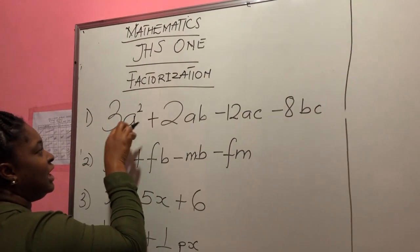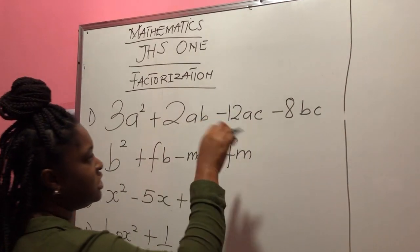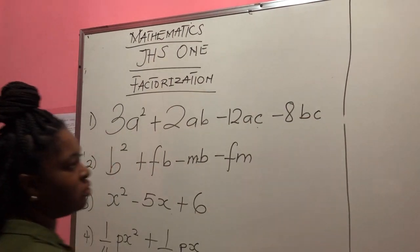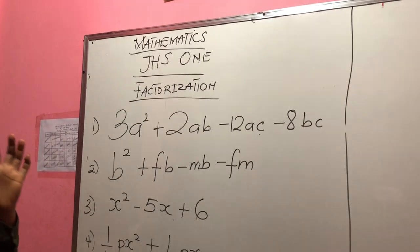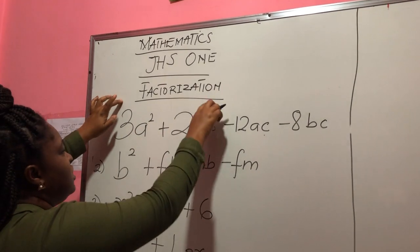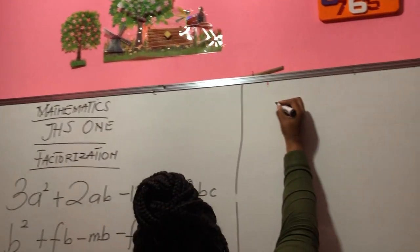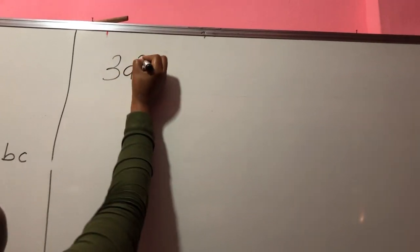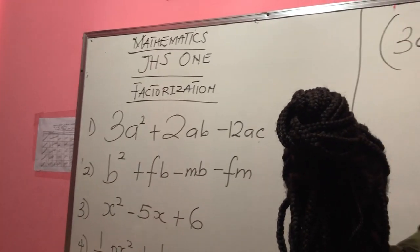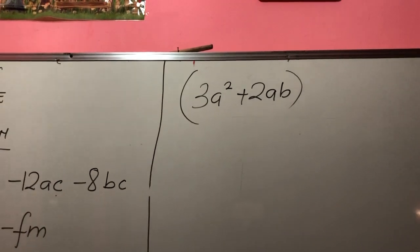A is here and A is here. And I can also group this set of variables because C is here and C is also there. So first of all, when you are solving questions of factorization, you group. So I have my first group here and my second group here. Let's write it. I have 3A squared plus 2AB — I group it. This is what grouping means: putting it in brackets.